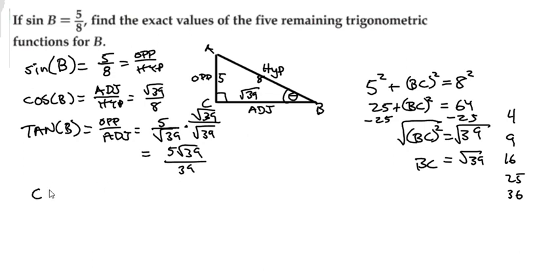And now when we think about our reciprocal functions, we got the cosecant of b, and remember cosecant is the reciprocal of sine. So basically just take your sine and just flip it, so you get 8 fifths.